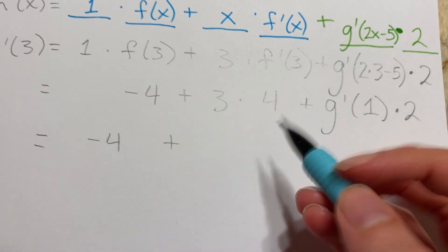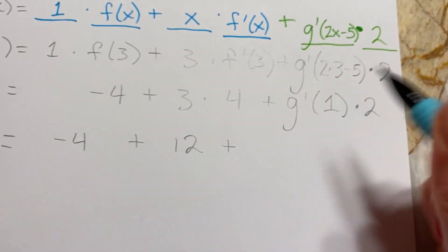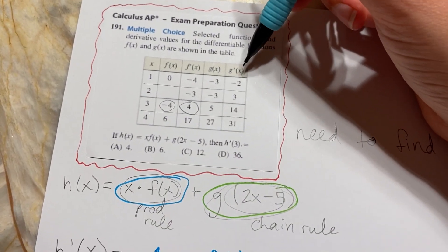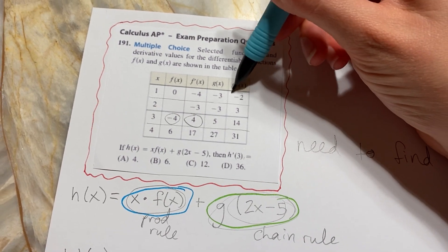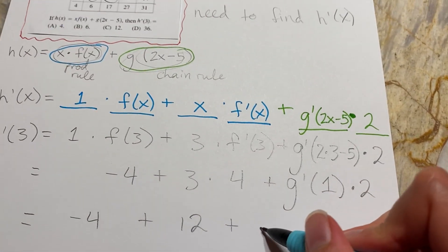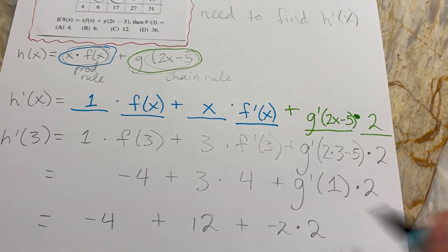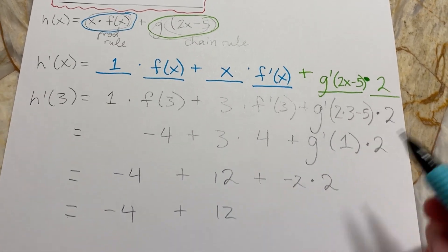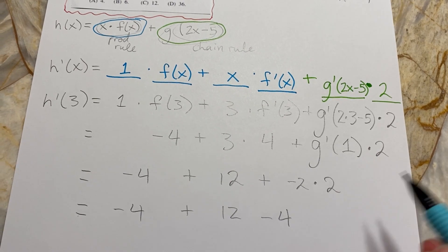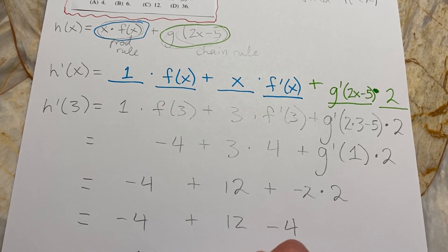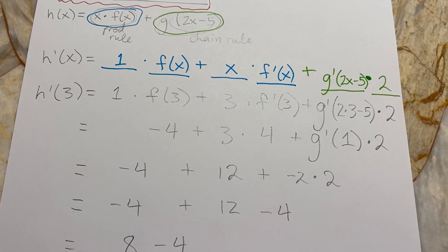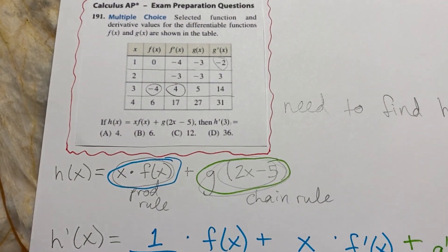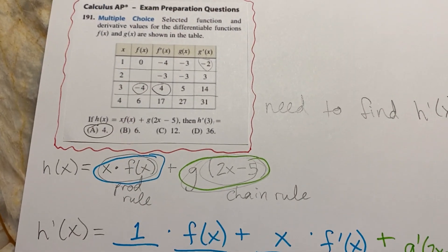Continuing to simplify: negative 4 plus 3 times 4 is 12, plus g'(1) — from the table that's negative 2 — times 2, which gives negative 4. So we have negative 4 plus 12 minus 4, which equals 8 minus 4 = 4. That matches answer choice A.